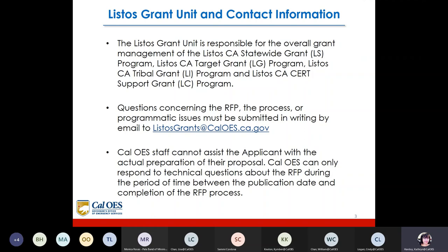The Listos Grant Unit is responsible for the overall grant management of the Listos California Statewide Grant LS program, the Listos California Target Grant LG program, the Listos California Tribal Grant LI program, and the Listos California CERT program LC program. Questions concerning the RFP, the process, or programmatic issues must be submitted in writing by email to listosgrants@caloes.ca.gov. Cal OES staff cannot assist the applicant with any actual preparation of the proposal. Cal OES can only respond to technical questions about the RFP during the period between the publication date and the completion of the RFP process.